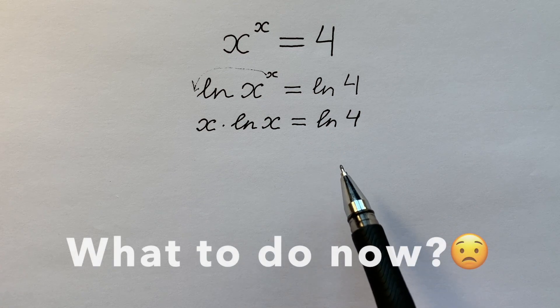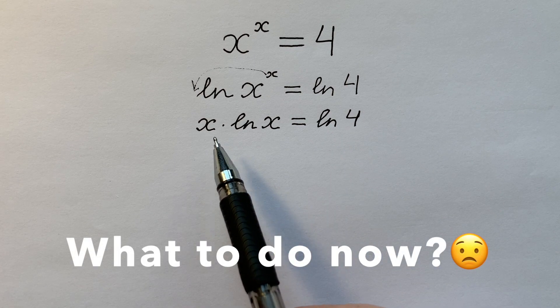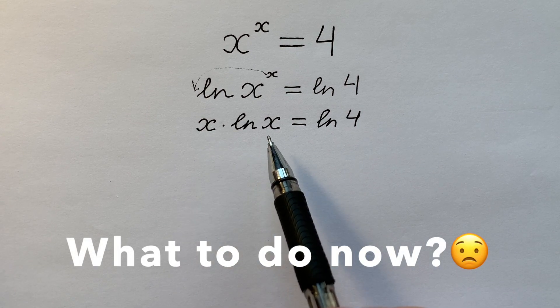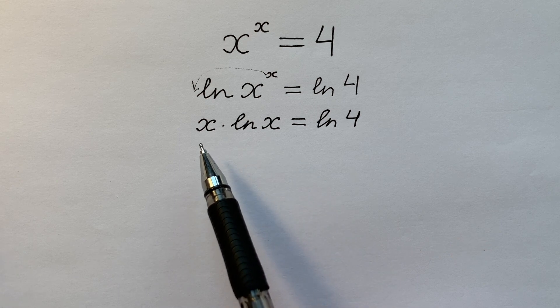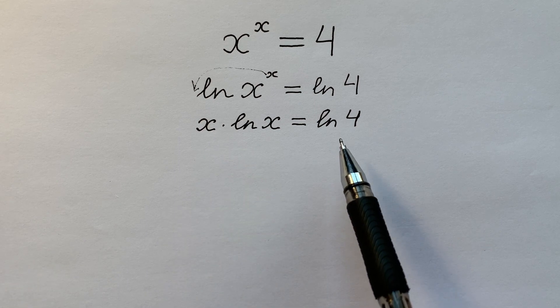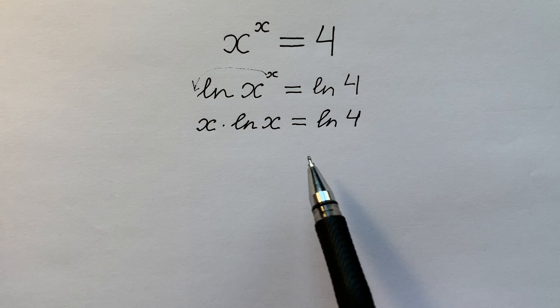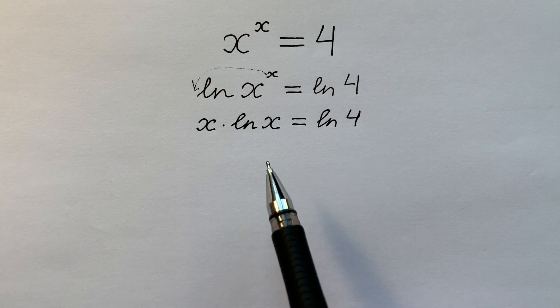But what we're going to do now? On the left side is the product of two different functions, a logarithmic function and linear function. And on the right side is a constant. How can we do in this situation? We're going to have an interesting trick.